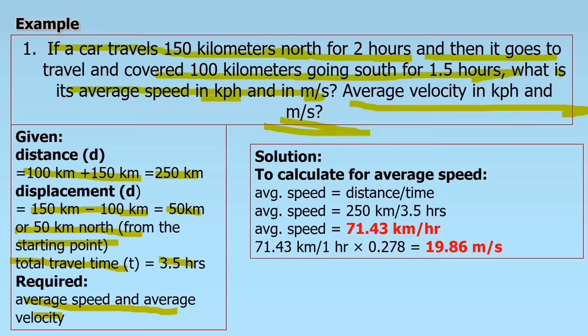To calculate the average speed, we are going to copy the formula. Average speed equals distance over time. You are going to divide the distance over time. Since we have the given distance equals 250 kilometers, we divide it by the time, 3.5 hours. Average speed equals 71.43 kilometers per hour. To convert it into meter per second, 71.43 kilometers divided by 1 hour times 0.278 equals 19.86 meters per second. That is our answer in calculating the average speed.